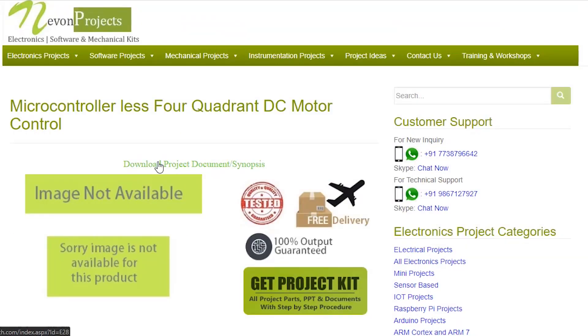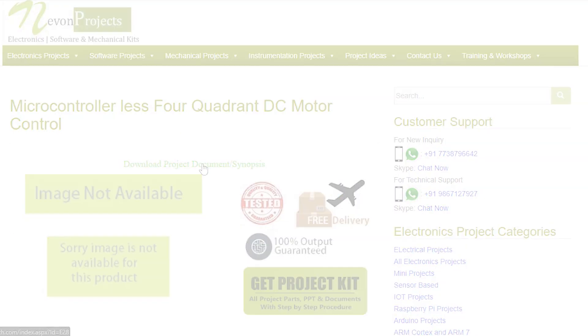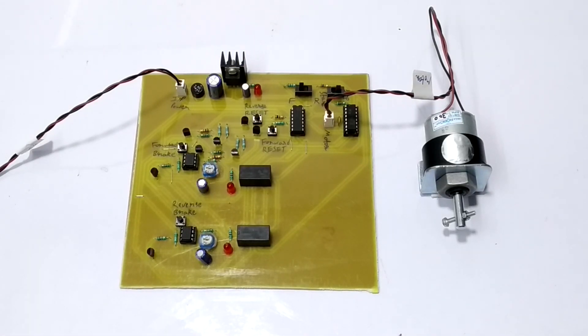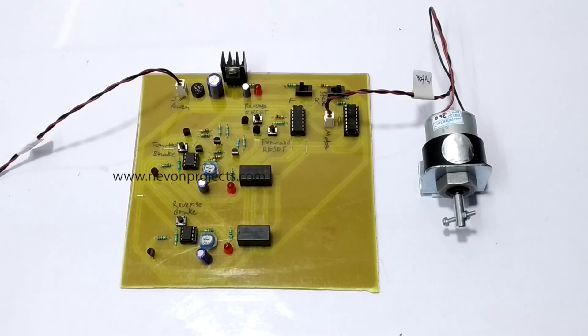And you can download the project documents for free. Hi guys and welcome to a demonstration of microcontrollerless 4 quadrant DC motor control. In this project, we are going to control the direction and the speed of the motor in forward as well as reverse direction. So let us see the operation of this project.